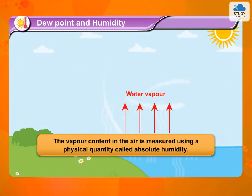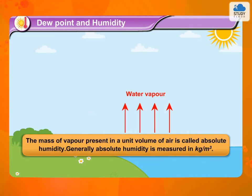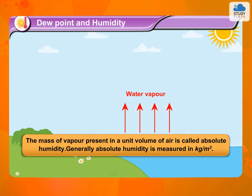The vapor content in the air is measured using a physical quantity called absolute humidity. The mass of vapor present in a unit volume of air is called absolute humidity. Generally, absolute humidity is measured in kilograms per meter cube.